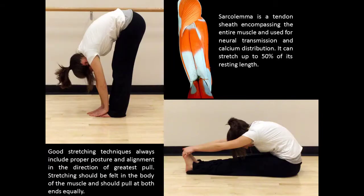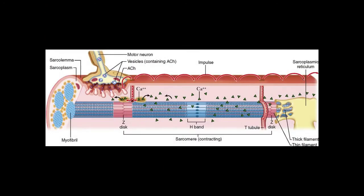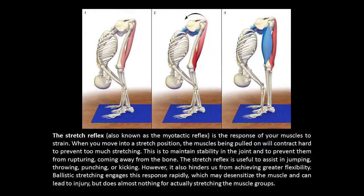Good stretching techniques always include proper posture and alignment in the direction of greatest pull. Stretching should be felt in the body of the muscle and pull at both ends equally. The sarcolemma is a tendon sheath encompassing the entire muscle, used for neural transmission and calcium distribution. It can stretch up to 50% of its resting length. The stretch reflex, also known as the myotactic reflex, is the response of your muscles to strain. When you move into a stretch position, the muscles being pulled will contract hard to prevent too much stretching, to maintain stability in the joint and to prevent rupturing or coming away from the bone.